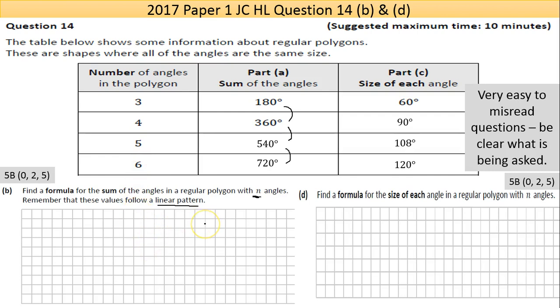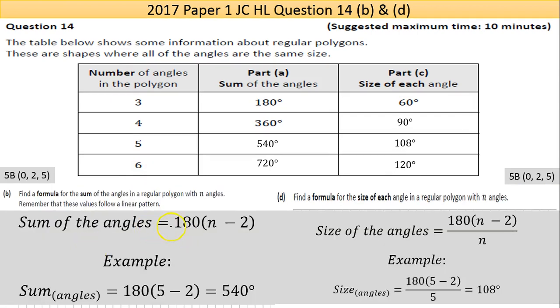Going straight to the answer here, you kind of have to work this through your head a little to find the formula. You see here that for your first polygon, it's n minus 2. So 3 take away 2 gives you 1, and you're multiplying that by your slope, by 180. So the formula is 180(n - 2).